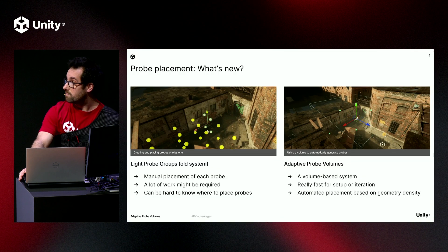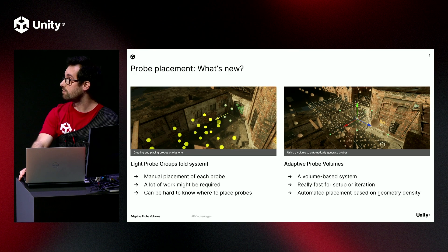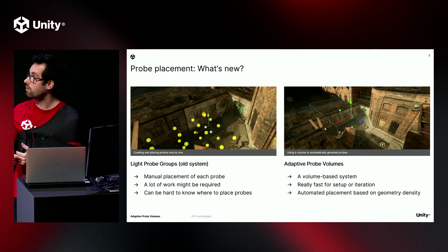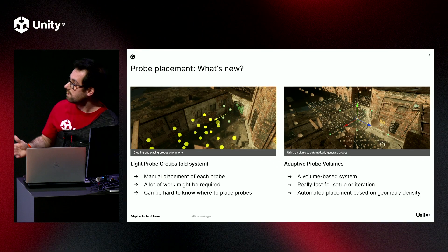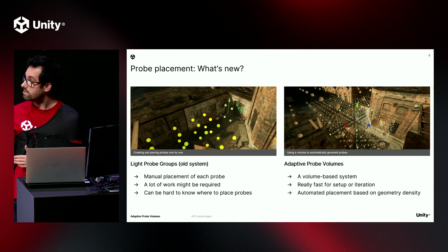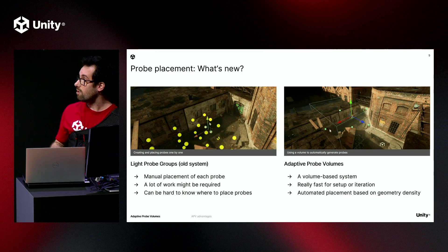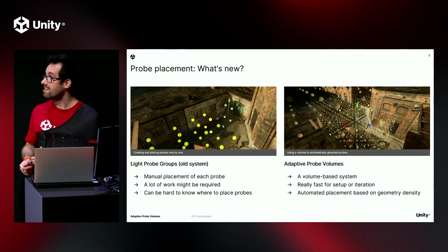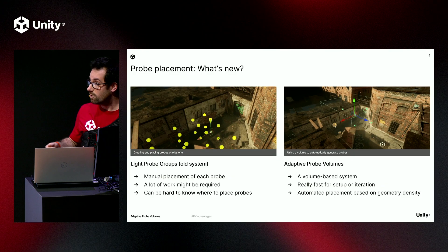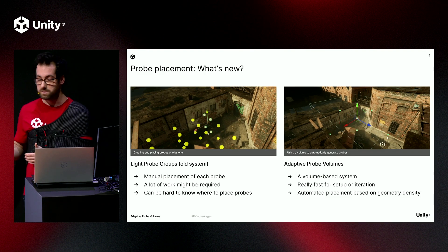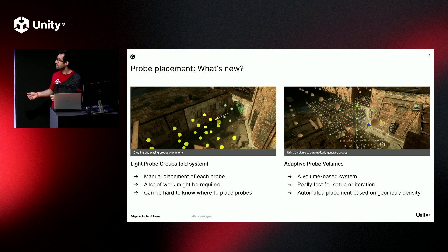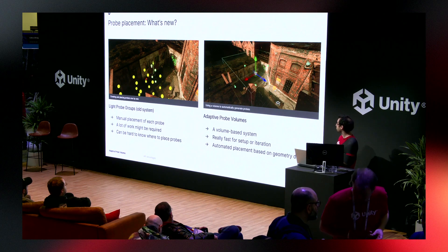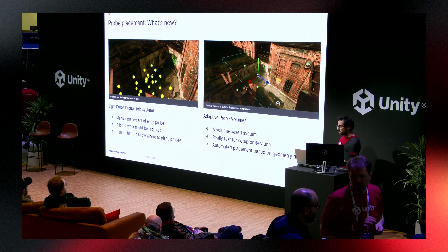Setup and iteration time are very important in a production. With the old light probe groups system, you have to place probes one by one, which can take a huge amount of time to set up. And if you update your scene, you may have more work to do, and it can be quite hard to know where to place probes. APV is a volume-based system, so it's really fast. You just set up a volume, and then Unity can create probes for you. That's so much faster.